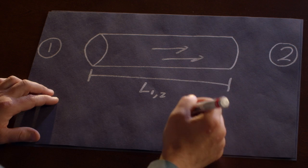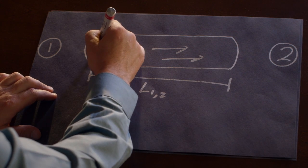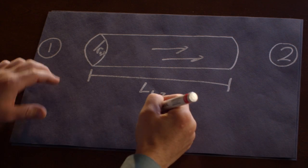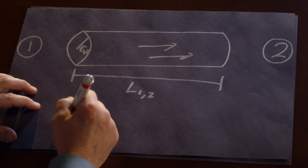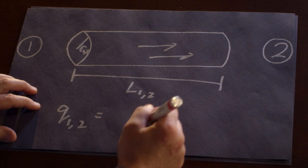and there's fluid being pushed along here, and we assume that it has a radius r one comma two, then we can define the flow rate, which comes from the theory of fluid dynamics, to be proportional to the pressure drop.